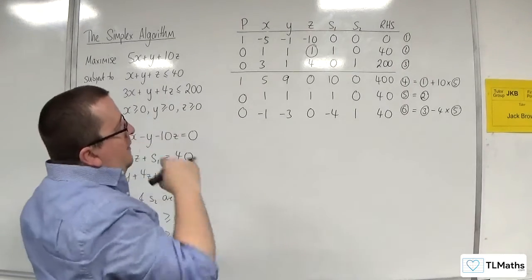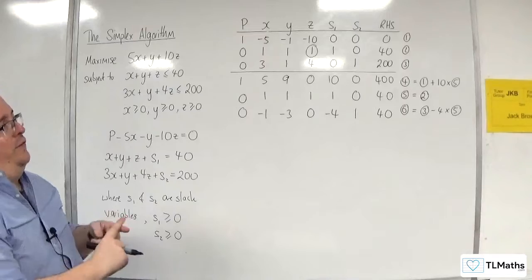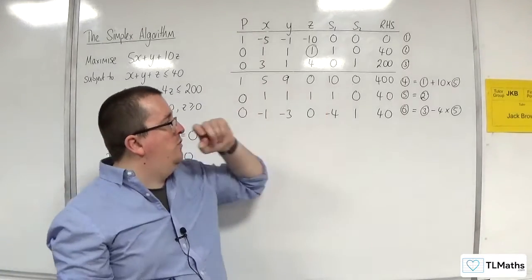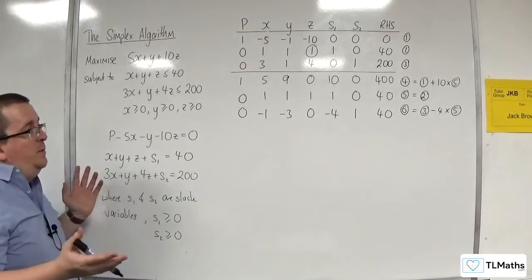OK. Now, are we done? Well, yes, we are done because there are no negatives in the top row. So I'm done. So we need to interpret this.